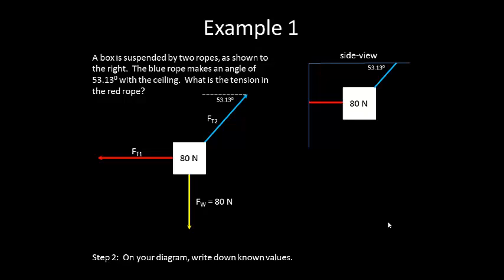Step two on the diagram, write down your knowns. So since it's an 80 newton box, we know the force of gravity or its weight is 80 newtons downward.